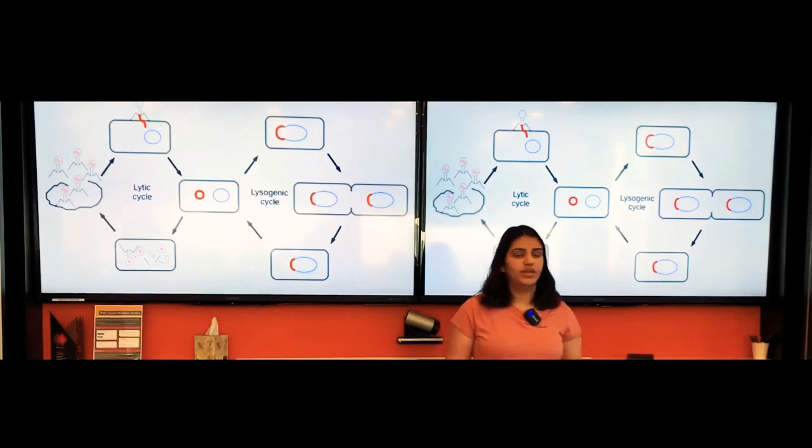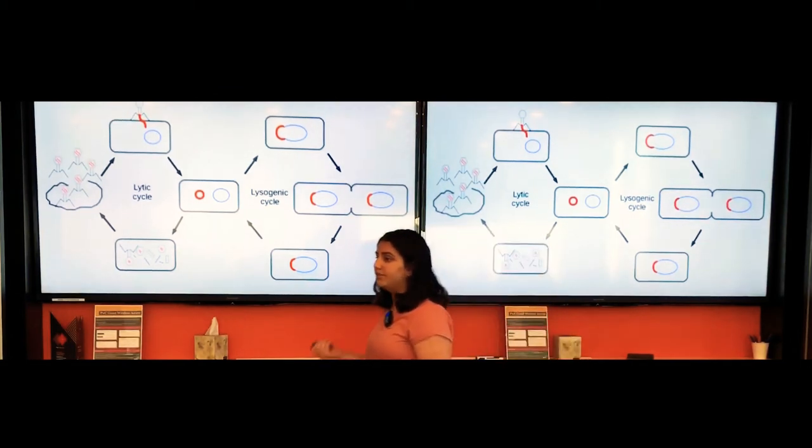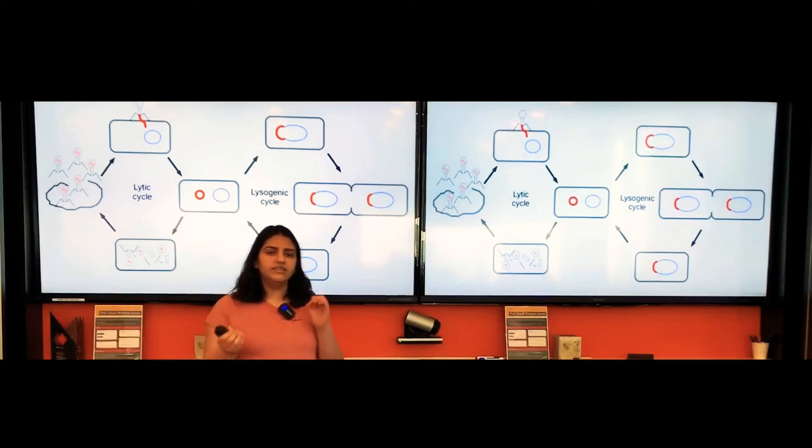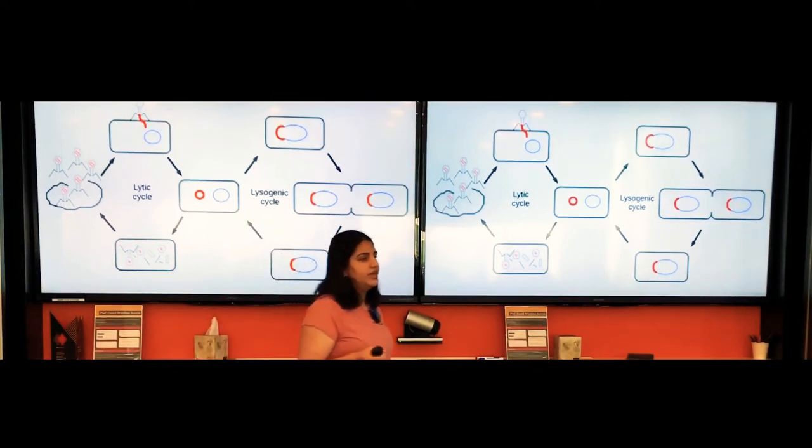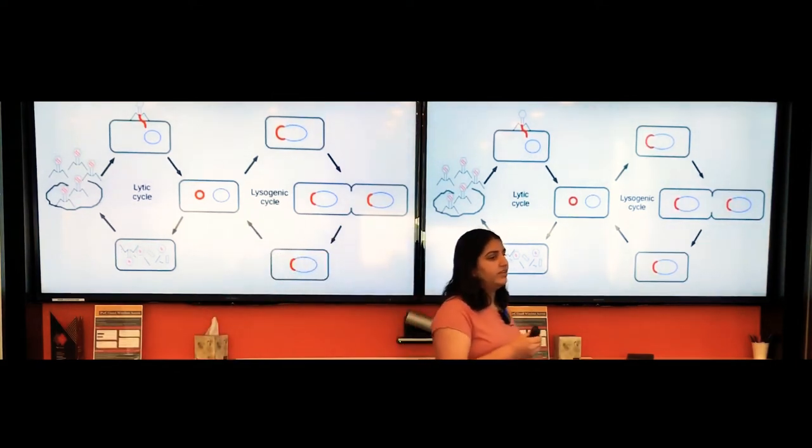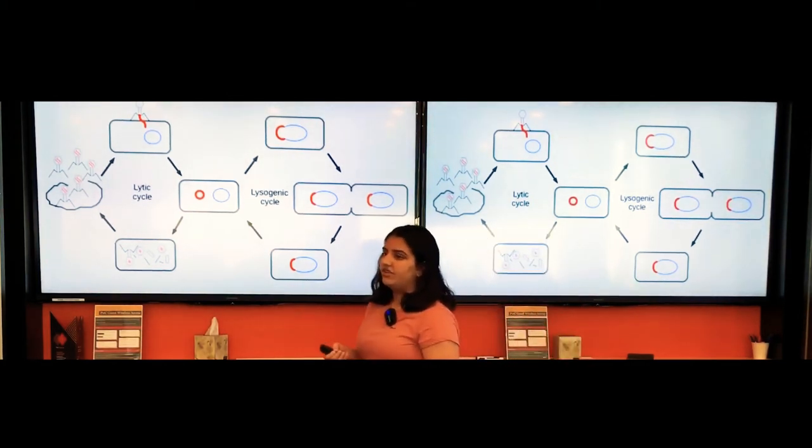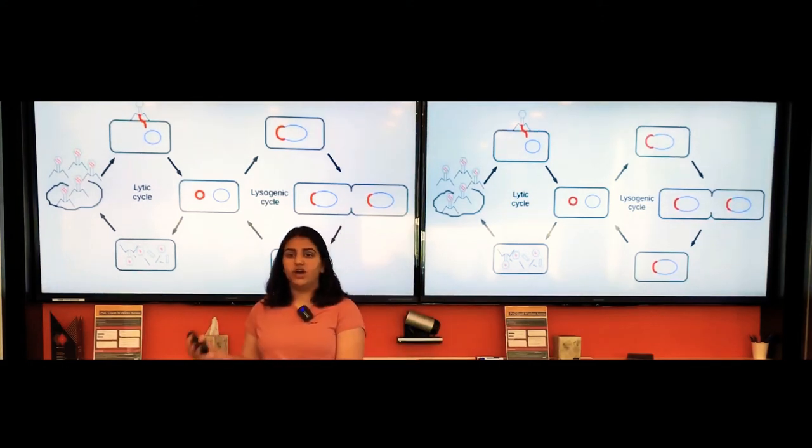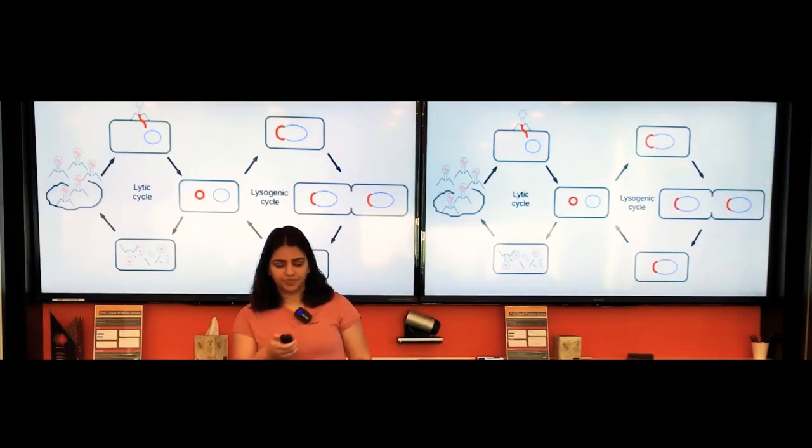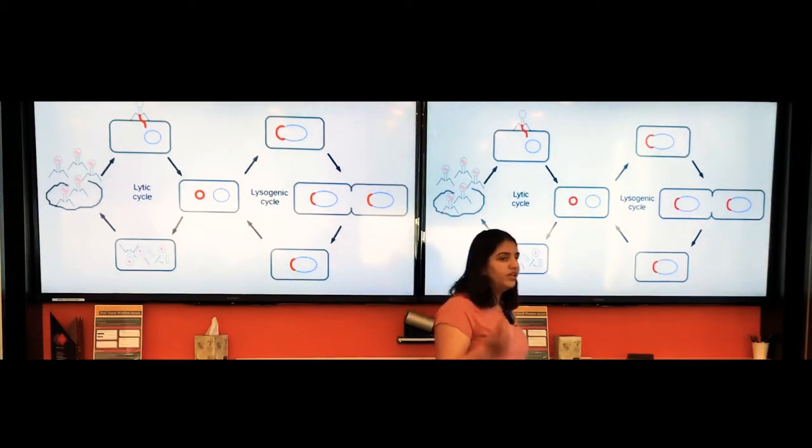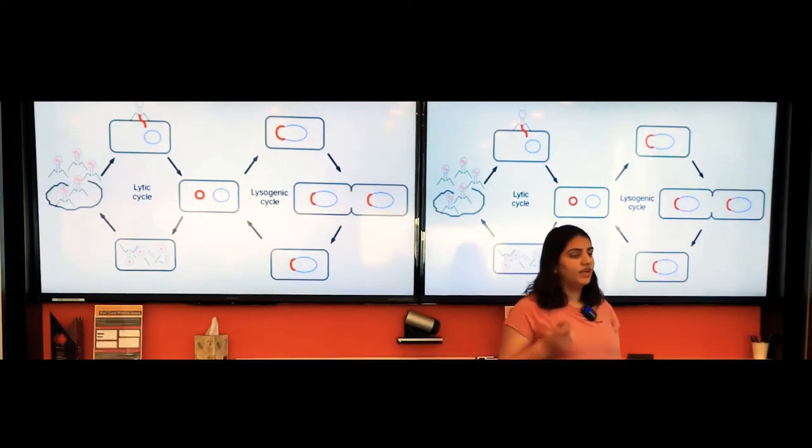The lysogenic cycle is similar. However, this time the phage integrates its DNA into the bacterium's chromosome, called a prophage, so that the phage DNA always gets copied along with the bacterium. The lytic phages are what we aim to use to eliminate food pathogens. Temperate phages, also lysogenic phages, are a bit troublesome, which I'll get into later.